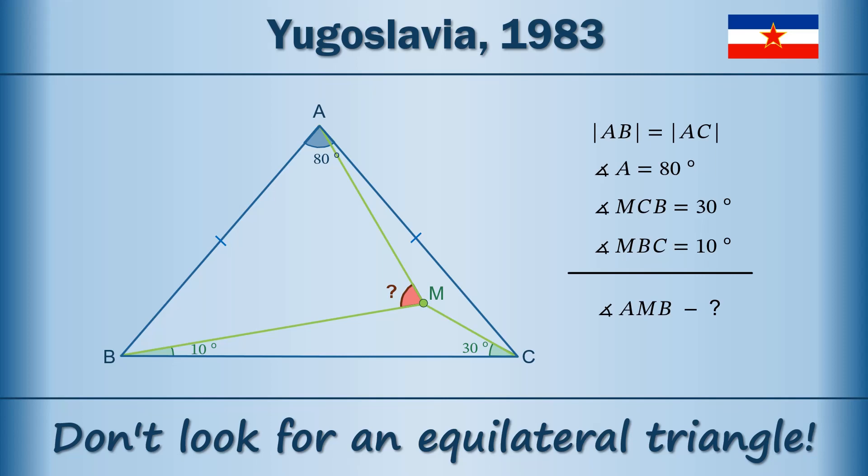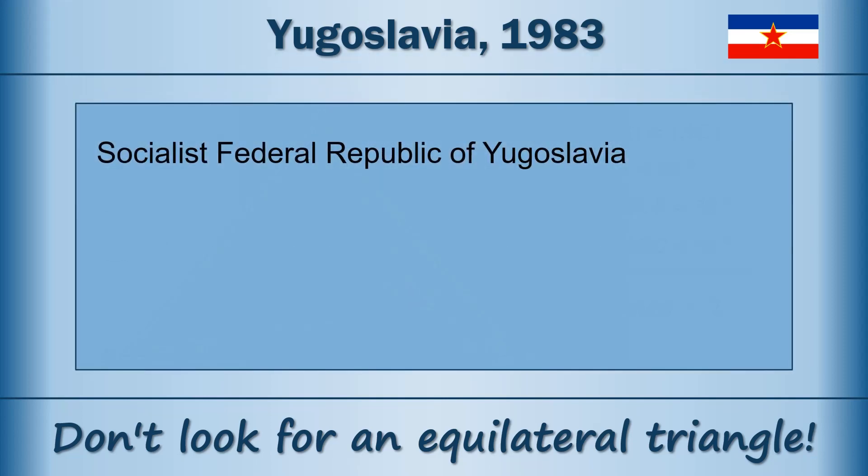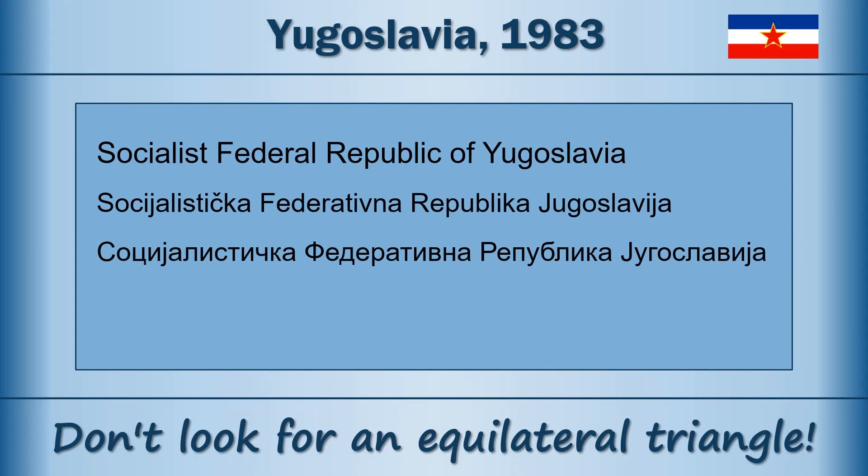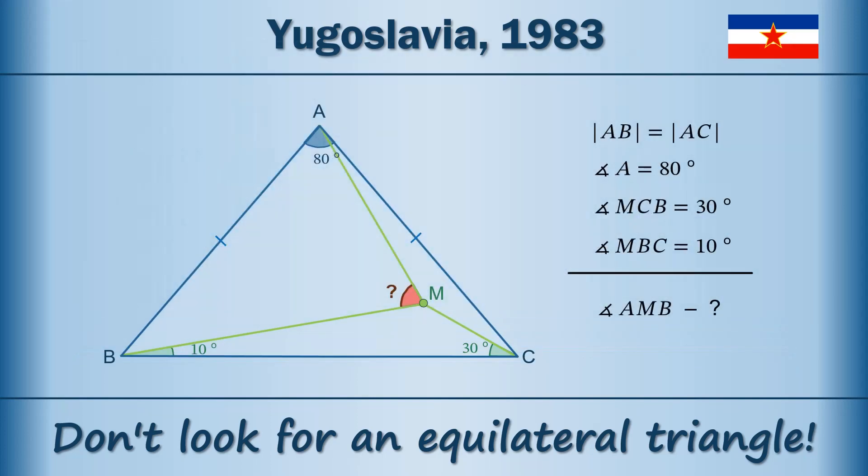The official name of the country: Socialist Federal Republic of Yugoslavia. The mathematical competitions took place there at regional level from 1950 and at federal level from 1960. There are numerous geometric tasks with a purpose to find the value of an angle.